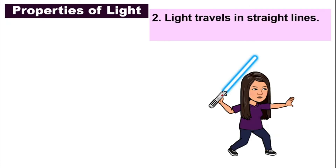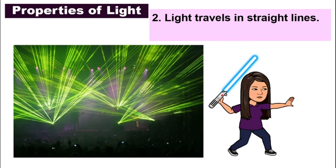Number two: light travels in straight lines. Light will not turn left and right — it will always travel in straight lines. For example, if you have been to a concert or any sort of performance, when they have beautiful colorful lights on the stage, you can see clearly that those lights make straight lines. This is because light travels in straight lines.